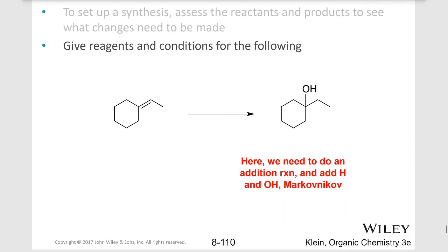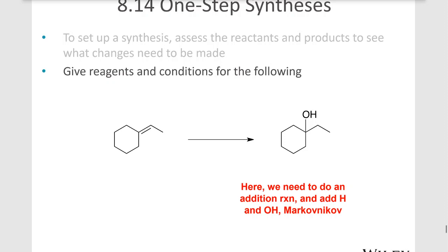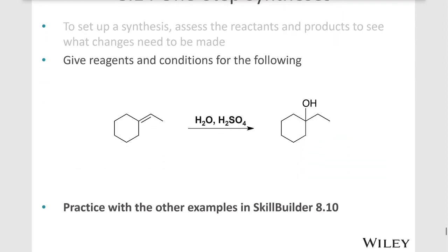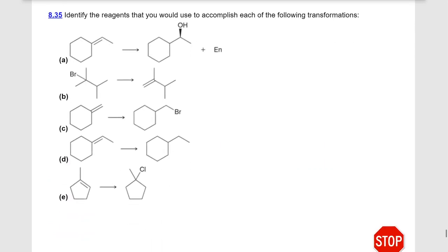So we've learned to do all of these things. In this example, we're trying to predict the reagents and conditions that will allow us to go from left to right, from starting material to product. In this case, we're adding an OH — we're also adding a hydrogen that isn't shown — so we're adding H and OH across a double bond in Markovnikov fashion, creating a tertiary alcohol, so we can simply use H3O+, or acid in the presence of water, which you can see here.